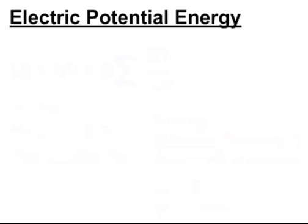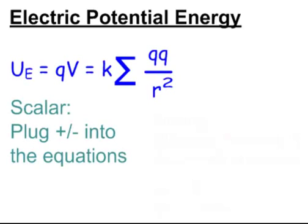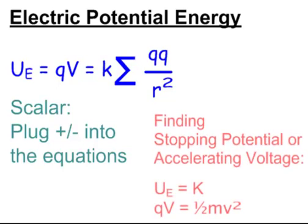For electric potential energy, potential energy equals Q times V — Q times the voltage or the potential — and it's also equal to K times the sum of QQ over R. These are scalar quantities, which means positives and negatives get plugged right into the equation. We use these any time we're trying to find stopping potential or accelerating voltage. In that case, we use potential equals kinetic: QV equals one half mV squared. That's either to get a charge going or to stop a charge, and it shows up in both magnetism and atomic physics problems.